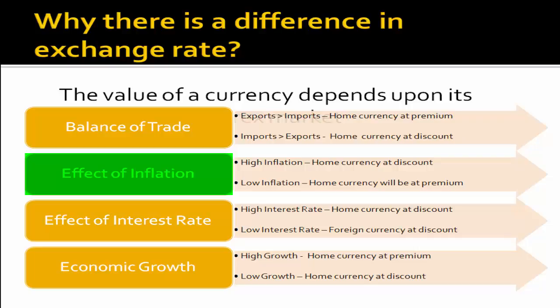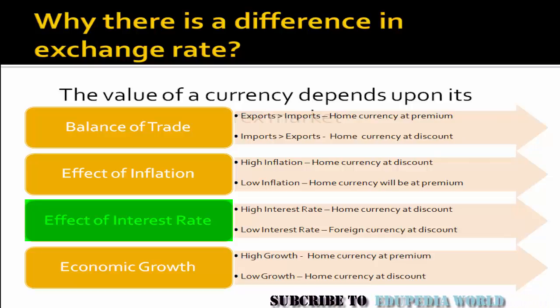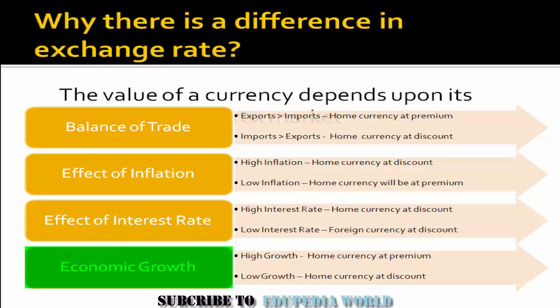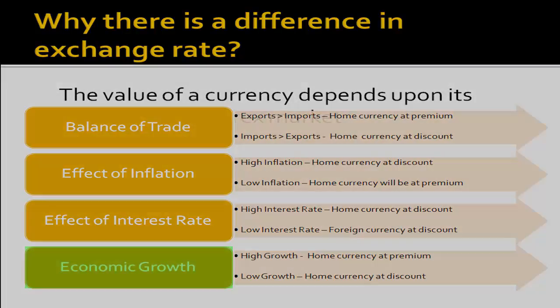Other factors include the effect of inflation: a country where the inflation rate is more, the currency will be at discount. We will discuss this further while covering the Purchasing Power Parity theorem. Similarly, the effect of interest rate: in countries where the interest rate is more, the currency will be at discount, and where there is a low interest rate, the home currency will be at premium. Economic growth also plays a role — a higher-growing economy will see its currency rise, while lower economic growth leads to a currency at discount. All these fluctuations are explained by certain theories.